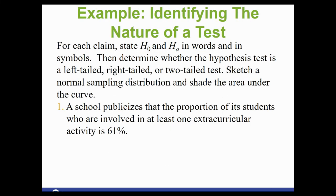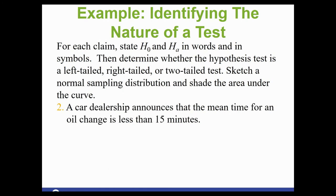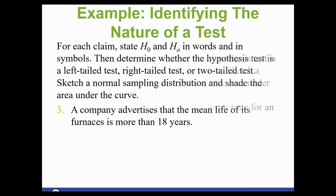Going back to our original three problems to make quick sketches. Example one — extracurricular activity: Hₐ was not equal to 0.61, so not equals means two tails. These are truly just sketches — don't feel like you need a ruler. Example two — oil change: Hₐ was less than 15 minutes, so less than means left tail. Example three — furnaces: Hₐ was greater than 18 years, so greater than means right tail.